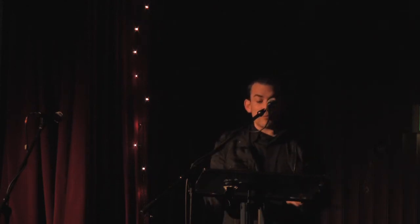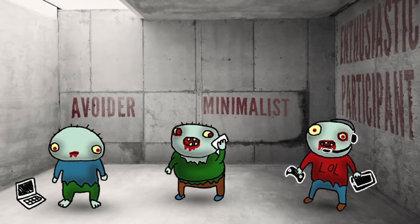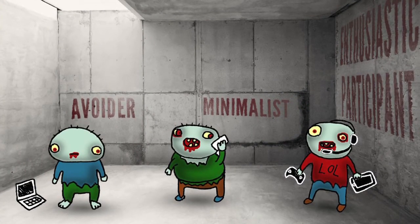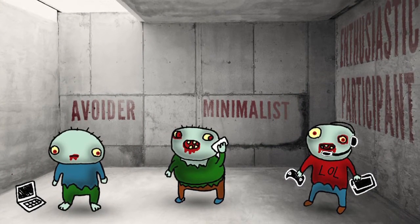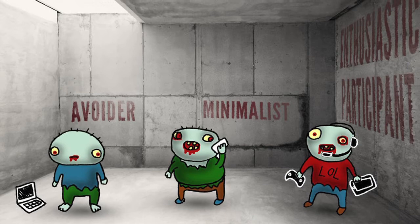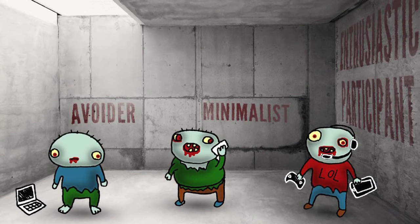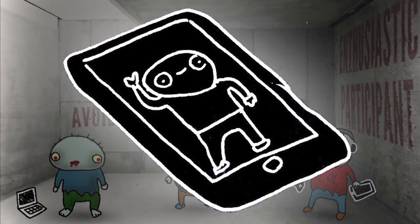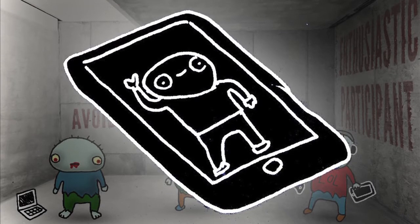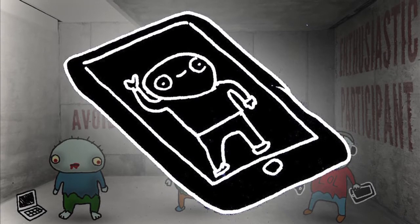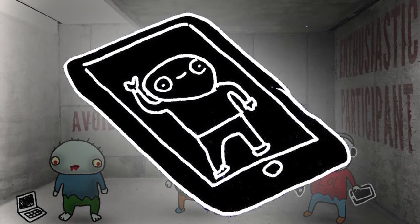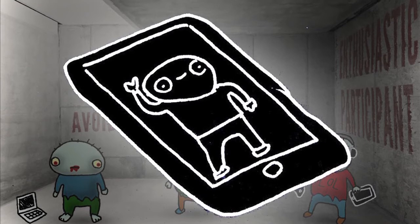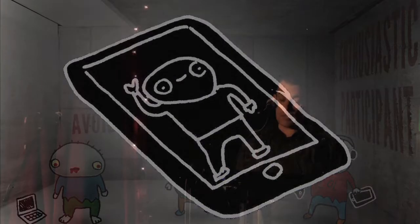Digital natives do come in different varieties. There are avoiders — those who don't really like to interact with technology. There are minimalists, who use it for a bit of email and mobile but aren't wholly embracing it. And then there's the always-on, 24/7, where the division between their online and offline lives is blurred. It is possible to design products that span across these groups, and it's best done by talking to them and continuous user testing.